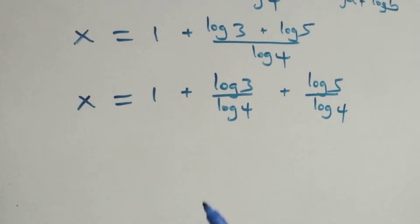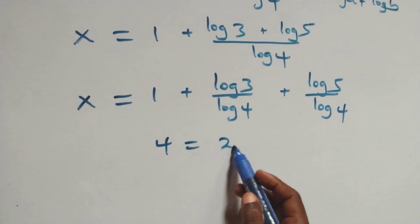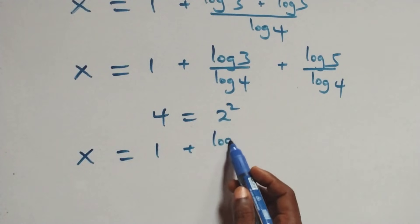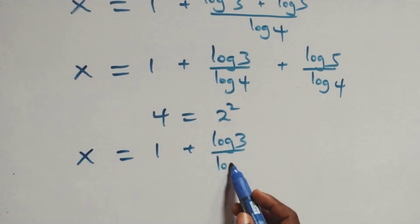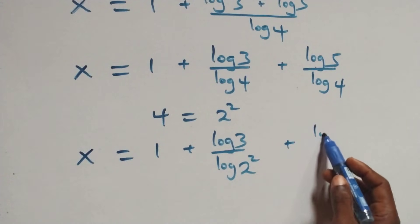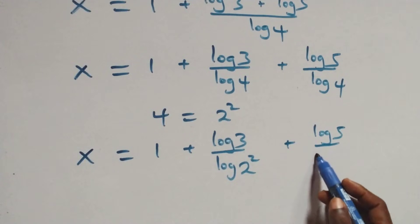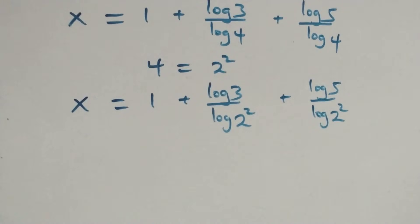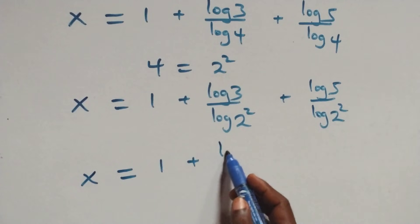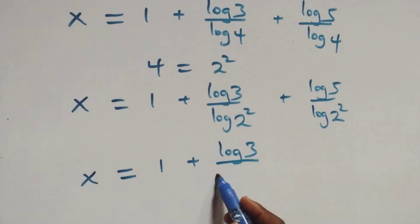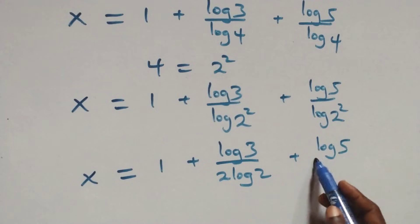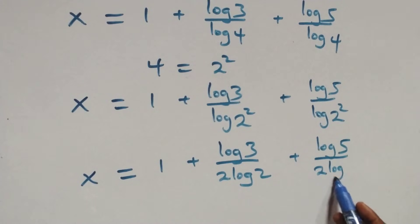We can express 4 as 2 times 2, which is 2 squared. Then what we have becomes x equals to log 3 over log(2²) plus log 5 over log(2²), which gives x equals to log 3 over 2·log 2 plus log 5 over 2·log 2.